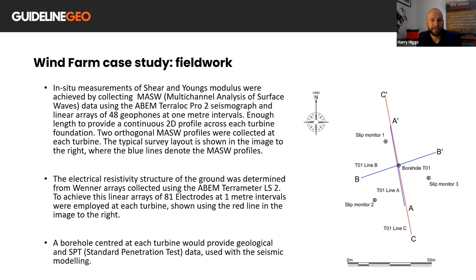In-situ measurements of shear and Young's modulus were achieved by collecting MASW data using the ABEM TerraLock Pro 2 seismograph and linear arrays of 48 geophones at 1 meter intervals. Enough length there to provide a continuous 2D profile across each turbine foundation, with two orthogonal MASW profiles collected at each turbine. The typical survey layout is shown on the image to the right, where the blue lines denote the MASW profiles. The electrical resistivity structure of the ground was determined from Wenner arrays collected using the ABEM TerraMeter LS2, and then to achieve this, linear arrays of 81 electrodes at 1 meter intervals were employed at each turbine, shown using the red line in the image to the right.